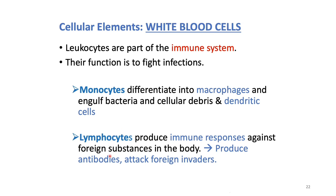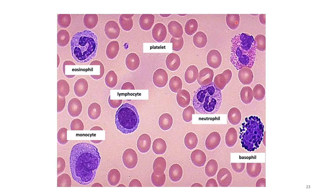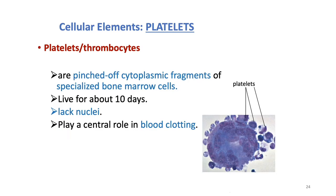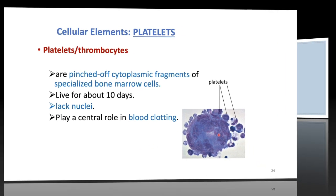Monocytes differentiate into macrophages, engulfing bacteria, cellular debris, and dendritic cells. Lymphocytes produce immune responses against foreign substances, producing antibodies and attacking foreign invaders. When viewed under the microscope, we can see numerous red blood cells, different types of white blood cells, and platelets. Platelets are tiny spherical or disc-shaped fragments of cytoplasm pinched off from large bone marrow cells. They live about 10 days. Most vertebrates other than mammals have thrombocytes for blood clotting; mammals have platelets.